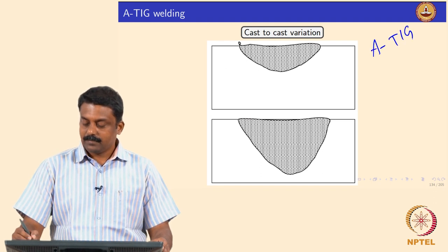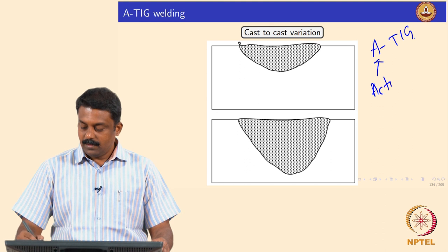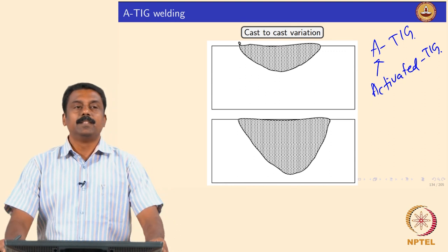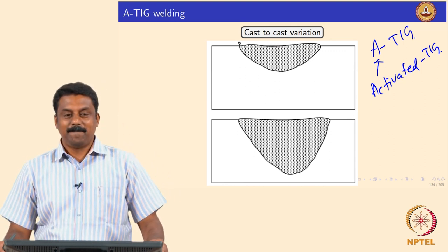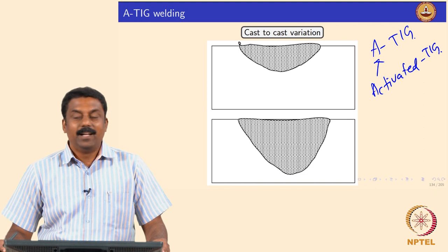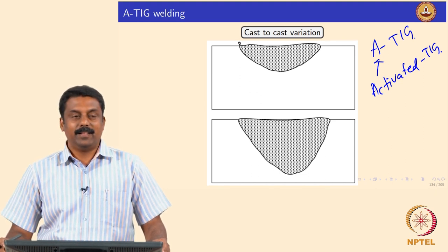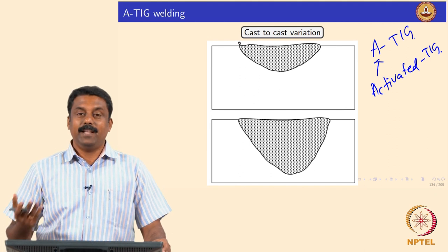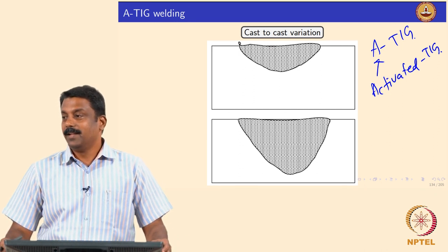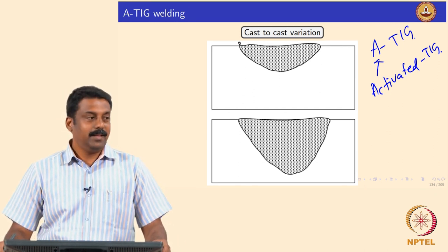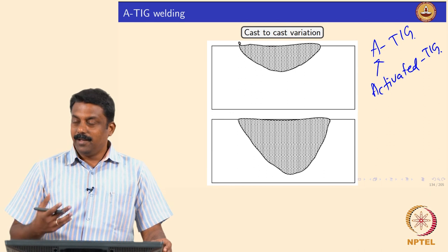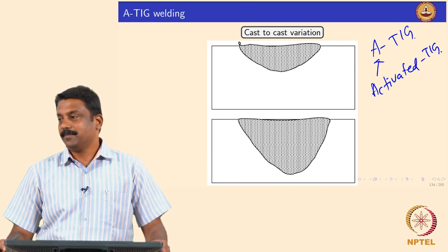A stands for activated TIG — the pool is activated. Before that, metallurgically there are a lot of challenges. If you are working in a steel plant, no two microstructures are the same — no two casts are the same. You always have small variations. So even if you have a very small compositional variation, your weld characteristics can be very different.